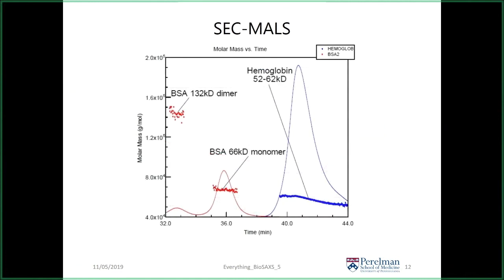The intensity of scattering varies as the square of the particle size, so bigger things scatter more strongly even if they represent the same mass proportion. SEC-MALS data is presented as a double-Y plot: on one axis you have the UV absorbance trace, on the other you have mass measurements. Plotted over the gel filtration traces are clusters of one-second mass determinations. For the BSA monomer you see 66–67 kDa, well resolved. For hemoglobin, the peak is a little irregular and the mass profile drops from 62 down to 52 kDa, possibly due to missing heme groups or degradation.